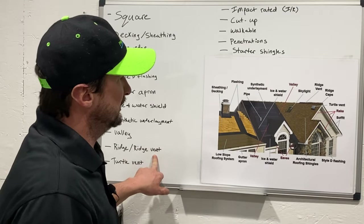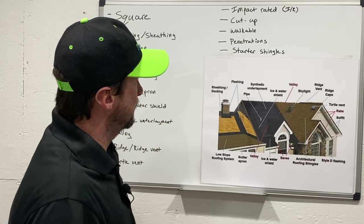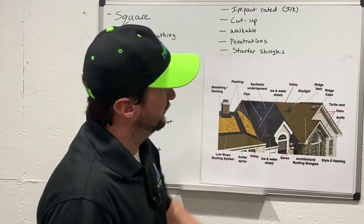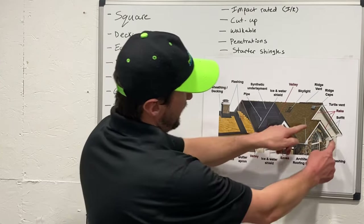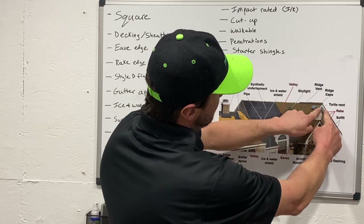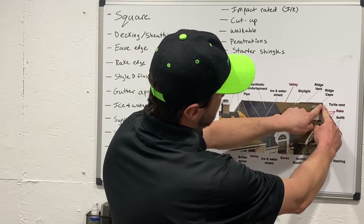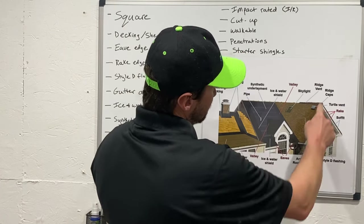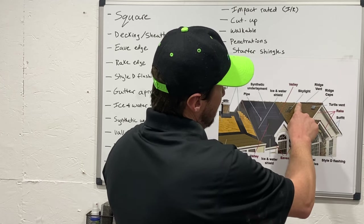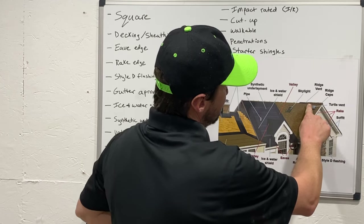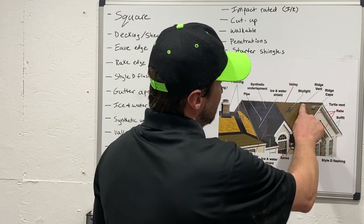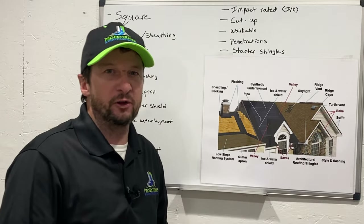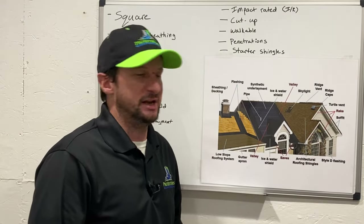The next one is a ridge or ridge vent. The ridge is where your rakes come together and make a point at the very top. The ridge vent is a venting system that sits on top of that ridge and allows all the hot air from the attic to escape.